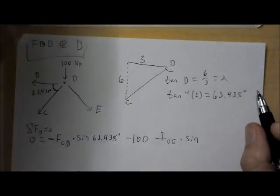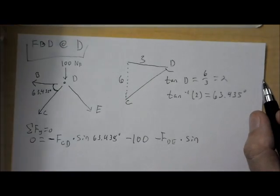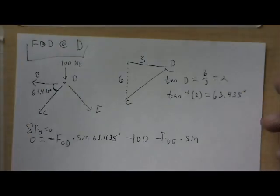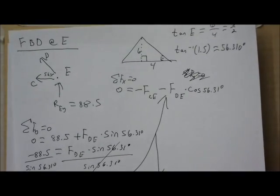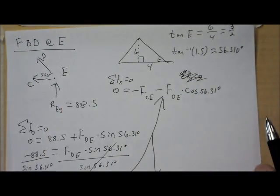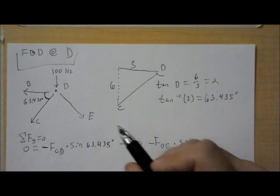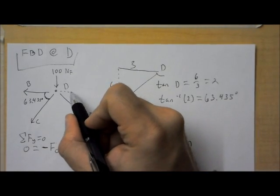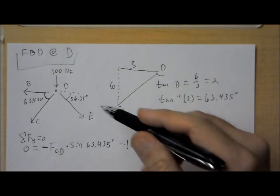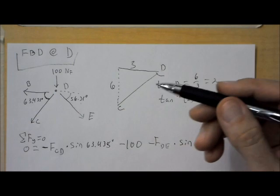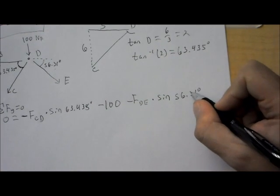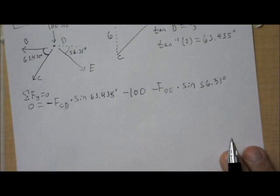Now, we didn't figure out that angle. But I think we do know that. If I bring you back to the free body diagram at E, we figured out that this angle was 56.31. So, that means this angle is also going to be 56.31 degrees. Again, for the same reason, alternate interior angles. So, times sine, 56.31 degrees.